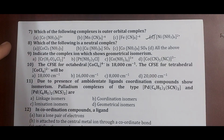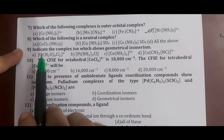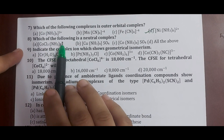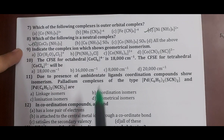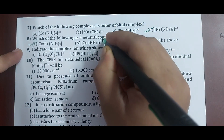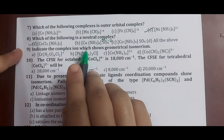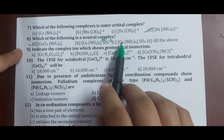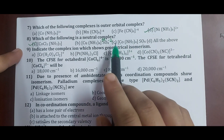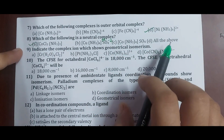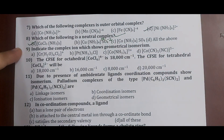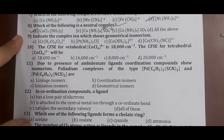Question 8: which is a neutral complex? Option A, [CoCl3(NH3)], has no charge outside the coordination sphere — it is a neutral complex. Option B has a counter ion outside, making it a cationic complex. Option C also has a counter ion, so it is also cationic. The correct answer is option A.